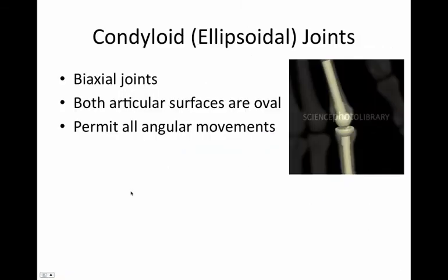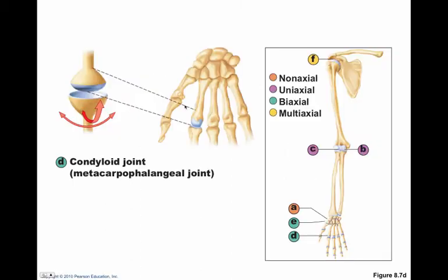Condyloid or ellipsoidal joints are biaxial joints. Their articular surfaces are oval and they permit all angular movements. For example, metacarpal 2 coming up and interacting with the proximal phalange — that joint right there is the condyloid joint.